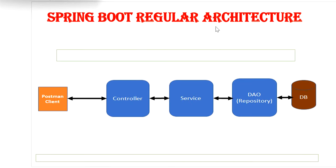In the regular architecture, you need to create controller classes, service classes, and the DAO layer, and then it will communicate with the database for any persistence operation. One notable advantage of Spring Data JPA is that it automatically manages CRUD operations — create, read, update, and delete — without writing any queries. To fetch all records you just call the findAll method of JpaRepository, or findById to fetch a single record based on ID.